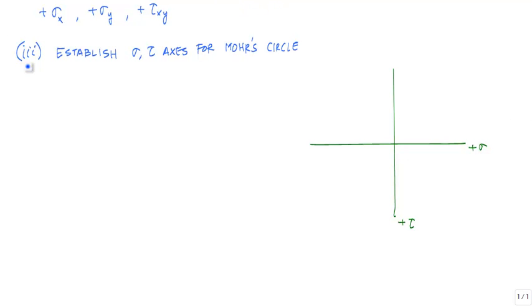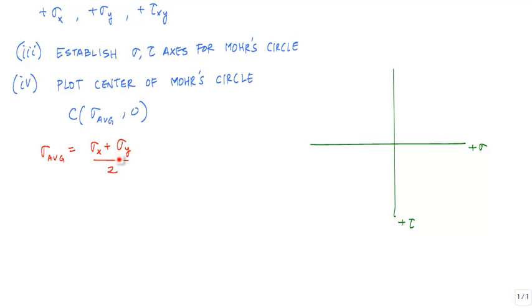Next, we want to determine the center of Mohr's circle, which is located at sigma_average, zero. Sigma_average is the average of the normal stresses. That point would be somewhere along the plus sigma axis because the tau value is zero. This red dot represents the center of Mohr's circle.